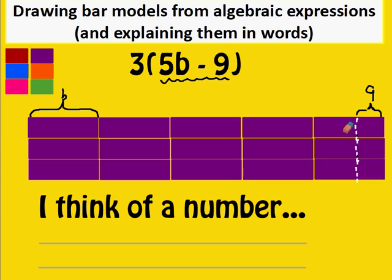Okay, so there we have a bar model for three brackets five b take away nine. How are we going to explain that in words? Well, I think of a number. I times it by five. That was the first thing that we did.